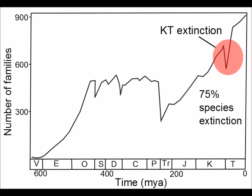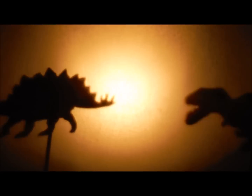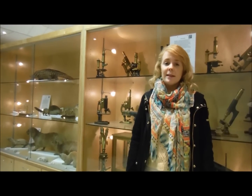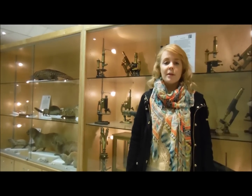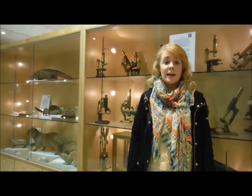The KT extinction wiped out 75% of species, including the dinosaurs. The KT extinction was the second largest mass extinction event and occurred 65 million years ago. Dinosaurs are an immensely diverse and extremely successful group, but what caused one of the most successful groups of animals to be wiped out so suddenly? There are two possible suggestions on the causes of the KT extinction.